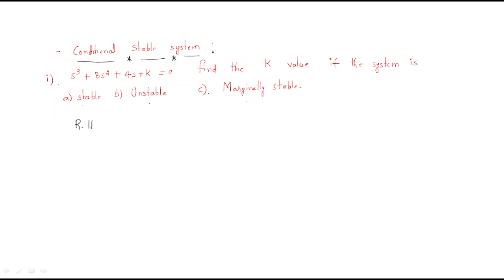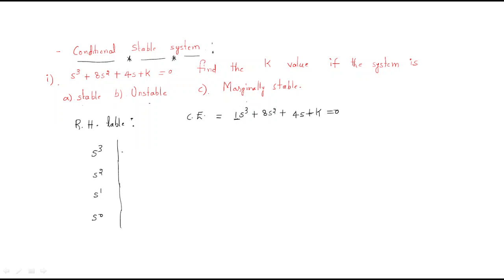To analyze this, first write down the Routh-Hurwitz table. The characteristic equation is s³ + 8s² + 4s + k = 0. The rows correspond to s³, s², s¹, and s⁰. The s³ row has coefficients 1 and 4; the s² row has coefficients 8 and k. The s¹ row coefficient is computed as (8×4 − 1×k) / 8, which simplifies to (32 − k) / 8.